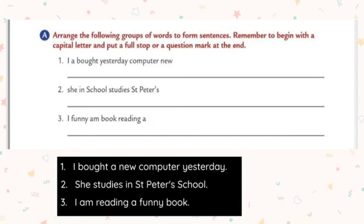Let's do the first one. The group of words: 'I bought yesterday computer new.' It is not a meaningful sentence. We arrange these words in proper order: 'I bought a new computer yesterday.' The letter I should be in capital. Put a full stop at the end because the statement is over and it is just giving information.